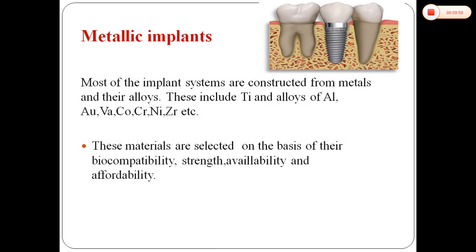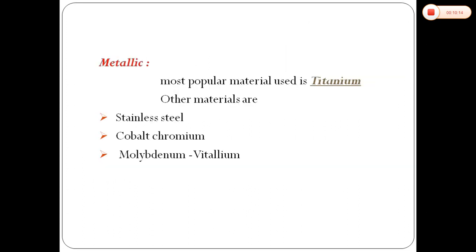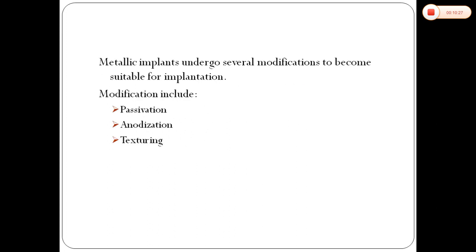Metallic implants: most implant systems are constructed from metals and their alloys, including titanium alloys. These materials are selected on the basis of their biocompatibility, strength, availability, and affordability. Titanium is the most popular material used. Other materials include stainless steel, cobalt-chromium, molybdenum, and vitalium. Metallic implants undergo several modifications to become suitable for implantation, including passivation, ionization, and texturing.